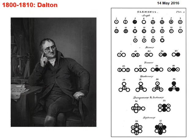Between 1800 and 1810, the British scientist Dalton postulated five things about the atom. He proposed that chemical elements are made of atoms, the atoms of an element are identical in their masses, atoms of different elements have different masses, and atoms only combine in small whole number ratios.